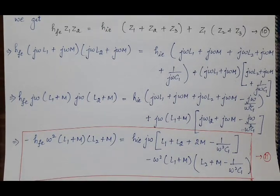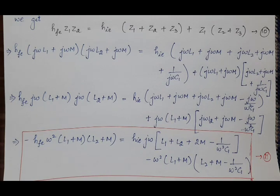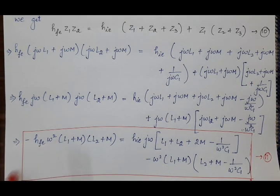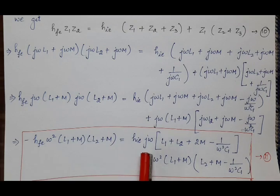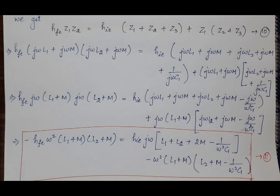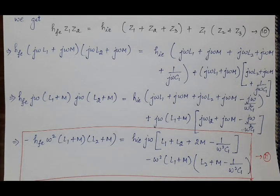From equation 11 we need to derive two things: (1) the criteria for sustained oscillations, and (2) the frequency of oscillations — that is, the value of ω. Since the equation contains j (imaginary unit), it is a complex equation, so we compare real and imaginary parts on both sides. We will compare the imaginary parts first.